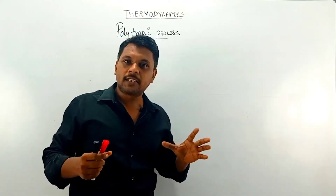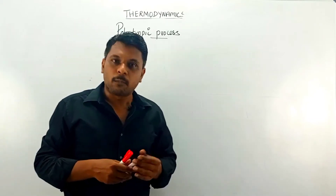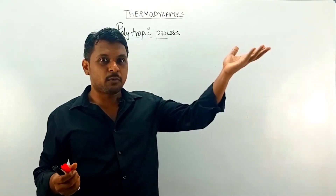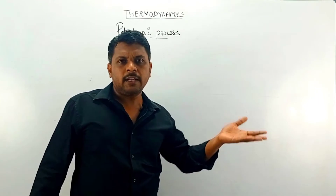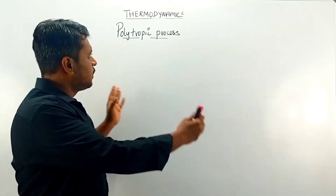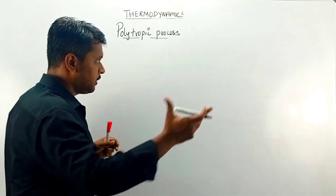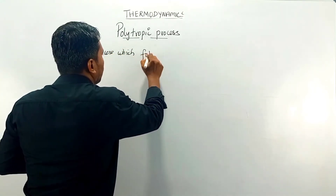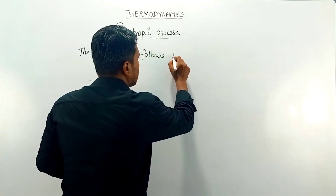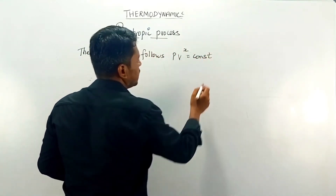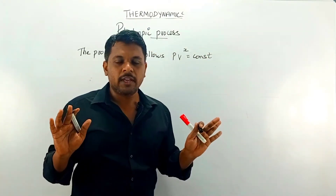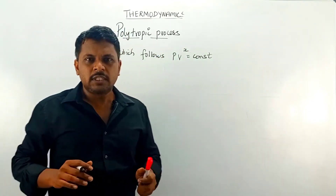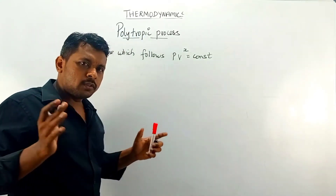In this video I will discuss a process called the polytropic process. This is the most real-life process when compared to other processes such as adiabatic, isothermal, and isobaric, which are ideal processes. The polytropic process is the most real process.